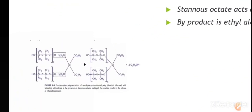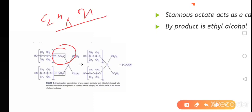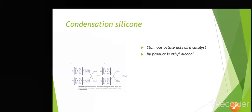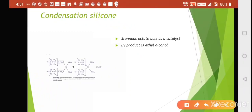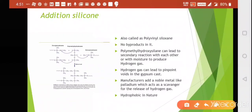In condensation silicone, stannous octoate acts as a catalyst — this must be remembered. The byproduct is ethyl alcohol (C₂H₅OH). The liquid component acts as a catalyst via stannous octoate, and the byproduct is ethyl alcohol. That's the key information for condensation silicone.